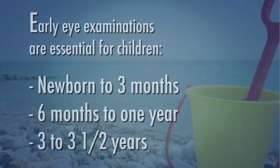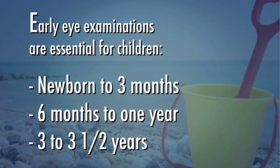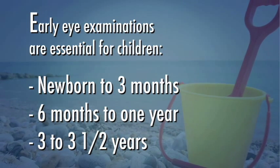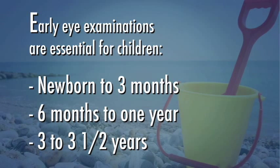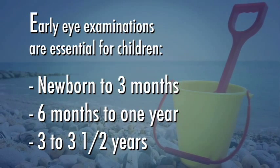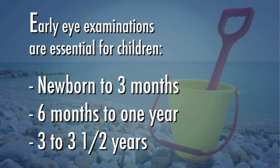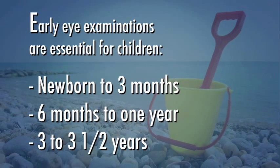So, how is amblyopia diagnosed in an infant, particularly if there are no obvious symptoms such as a misaligned eye? Most doctors test vision as part of a child's medical examination and may refer a child to an ophthalmologist if there is any sign of eye problems. If there is a family history of misaligned eyes, childhood cataracts, or serious eye disease, an ophthalmologist should examine the eyes during infancy.